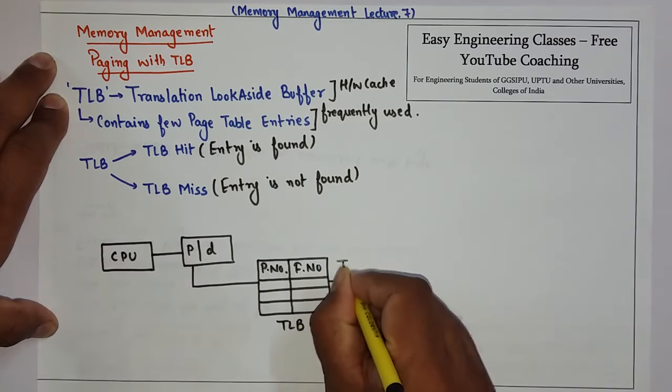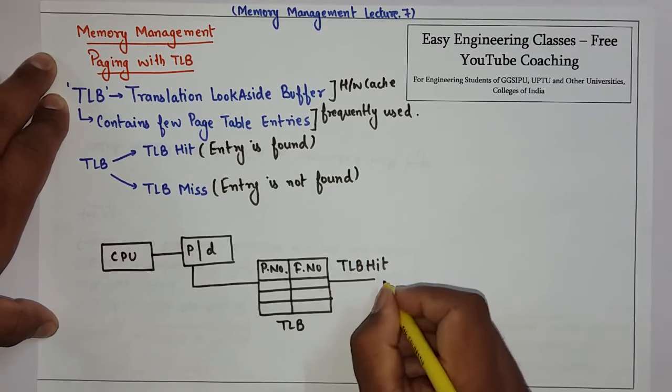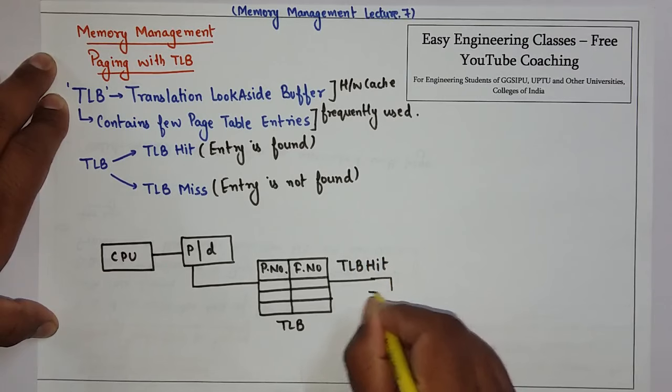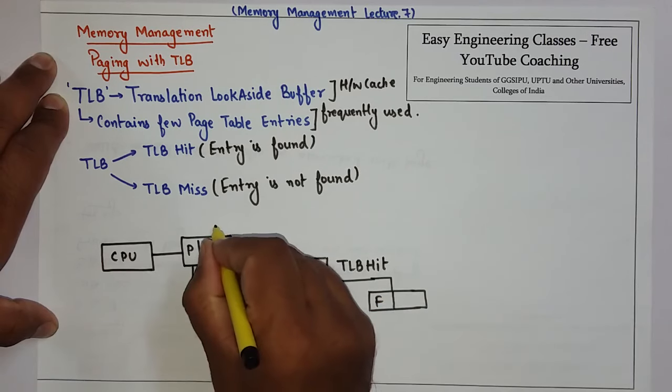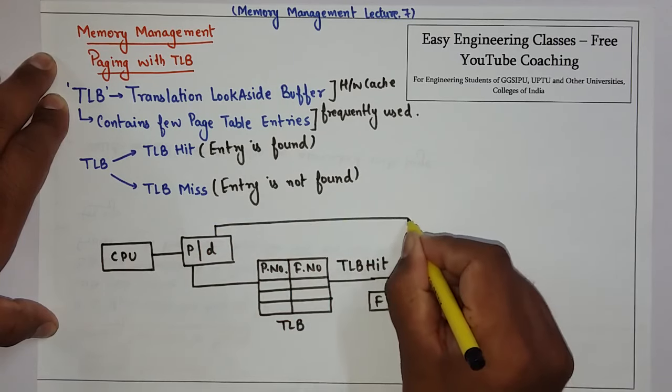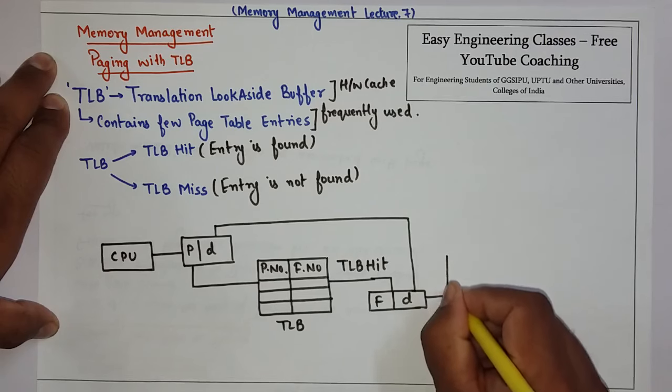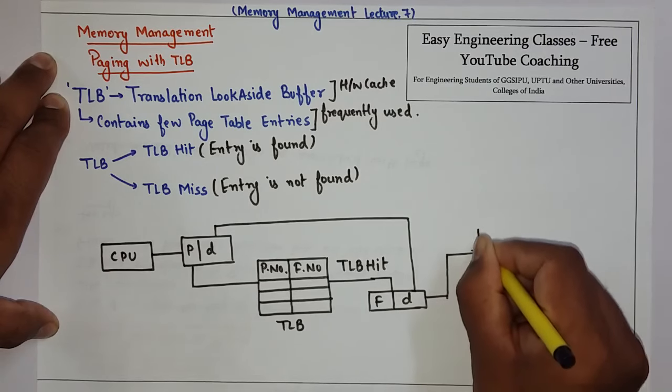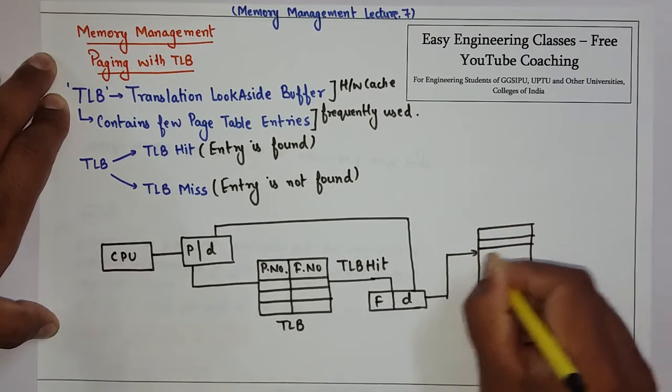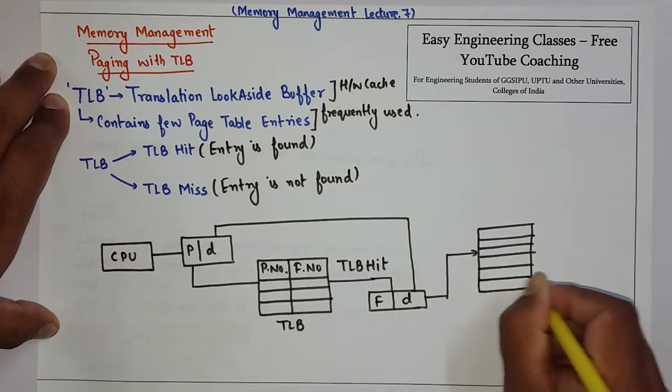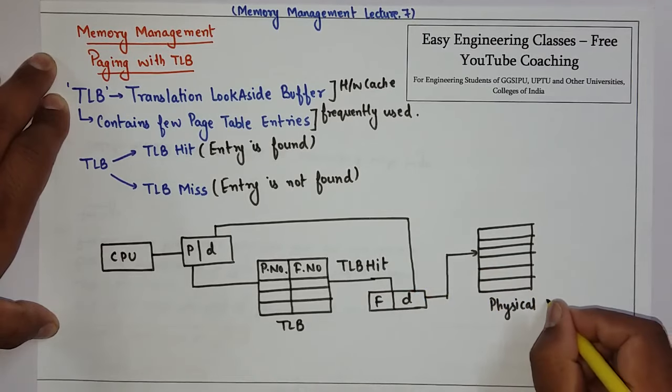In the case of a TLB hit, we get the frame number from the TLB and displacement from the offset, and from there we can simply access the physical memory which is divided into frames. This is when a TLB hit occurs.